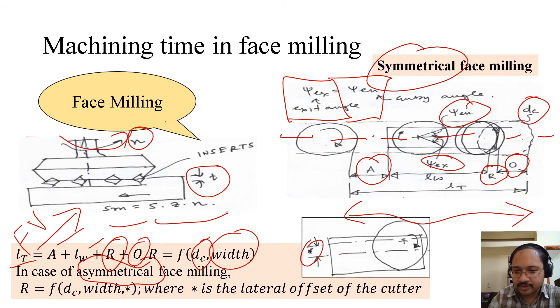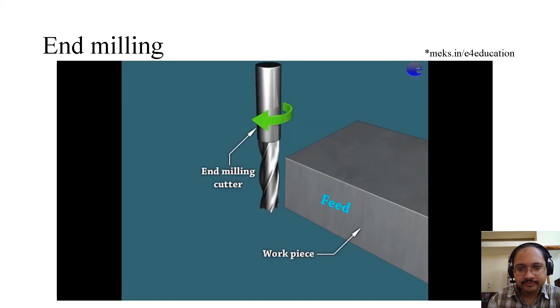If it was an asymmetrical face milling, then there would be a gap between the two axes. One is the axis of the cutter, another is the axis of the workplace. In that case, R - the extra travel - will be a function of dc, width, and that asterisk shown here, this gap, that is the lateral offset of the cutter.